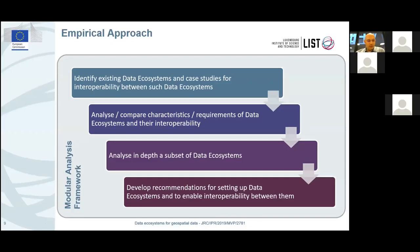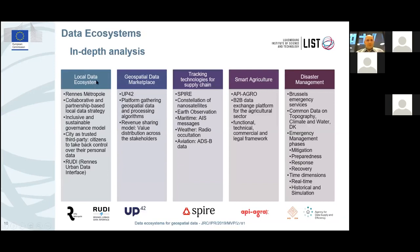The approach was empirical by principle and relied on the identification and analysis of existing data ecosystems. A subset of five were selected for in-depth analysis. All analyzed ecosystems contributed to the development of recommendations presented today. The five selected ecosystems are: first, the local data ecosystem illustrated by the case of Rennes Metropole and its initiative called Rennes Urban Data Interface. Rennes has been implementing since 2016 a collaborative and partnership-based local data strategy targeting an inclusive and sustainable governance model, adopting the quadruple helix model.